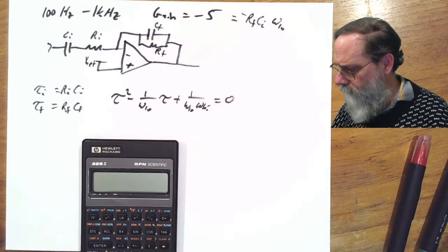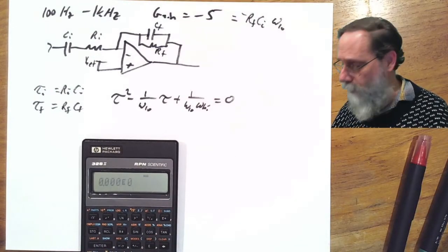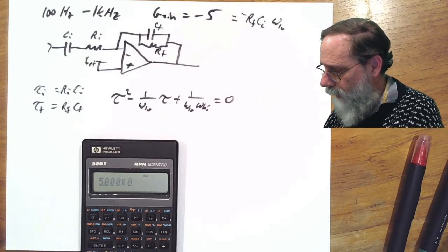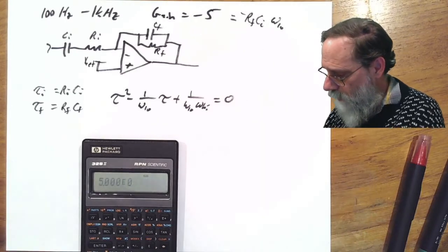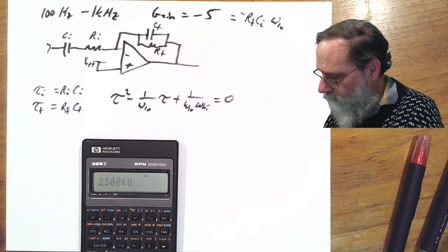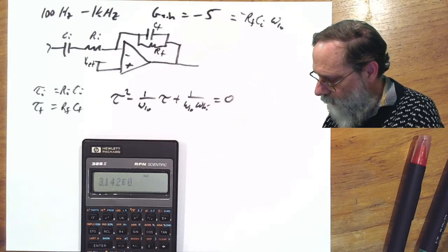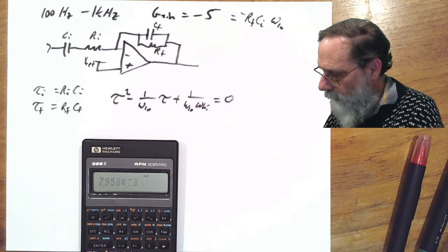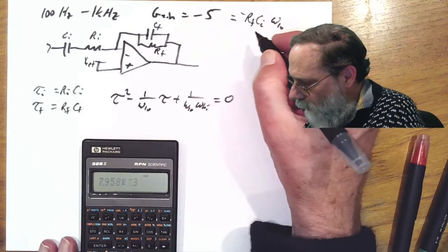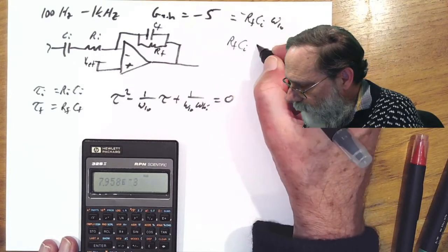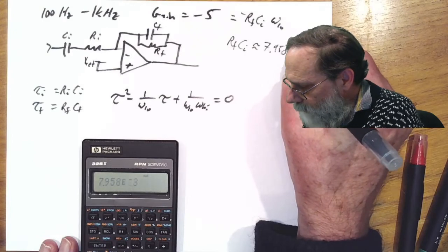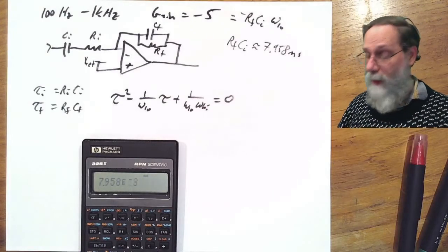Let's do the RfCi one first. So we've got 5, and we want to divide that by 2 pi times 100 hertz. So divide by 2, and then divide by pi, and then divide by 100. And we get this RfCi is approximately 7.958 milliseconds. That's a pretty big time constant.